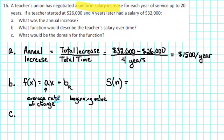The average rate of change is the annual increase, the $1,500 per year. So we'll have $1,500 multiplied by the number of years, and then we'll need to add that to the starting, or the beginning salary, which was $26,000. So this particular function will give us the salary in dollars for a certain number of years since the teacher began service.